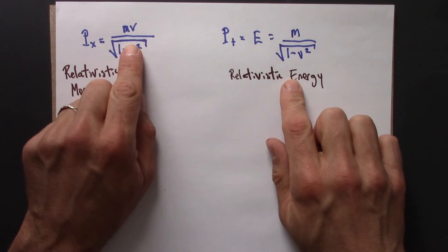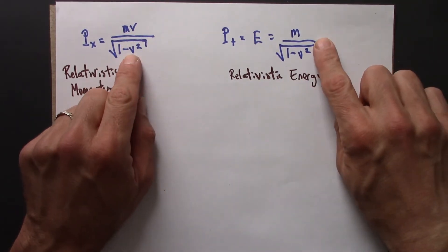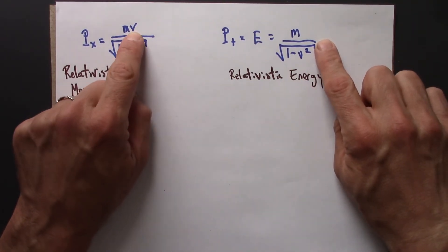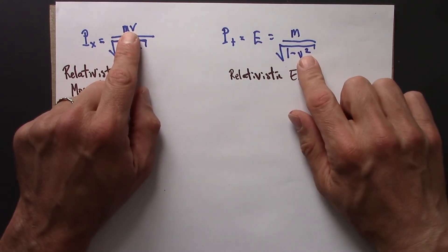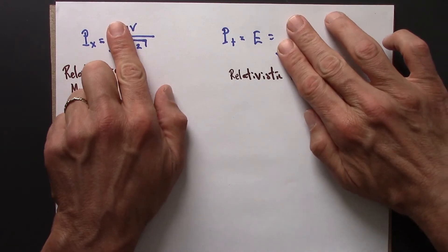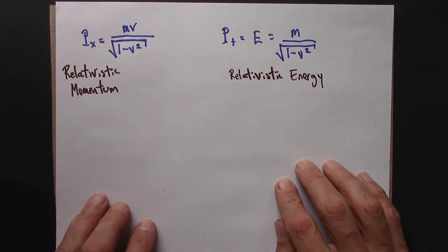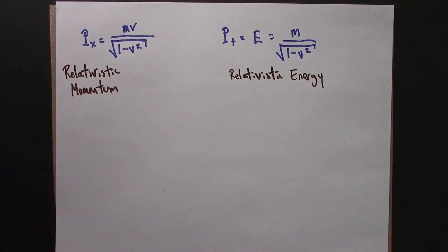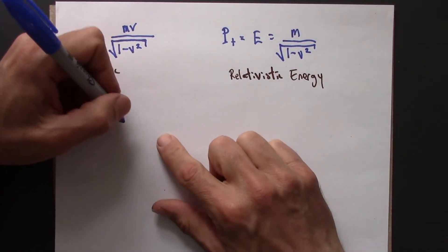So here's a thing to notice. These two formulas are almost the same. The only difference is the presence of this v here. So if I took this and divided it by that, all of this stuff cancels, and I'm just left with v. So that leads us to this nice result that can be useful sometimes,